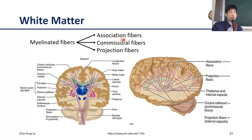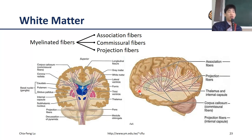The association fibers are defined as the fibers that connect different brain regions within one hemisphere. That means they won't go through different hemispheres — they simply connect different regions within the same hemisphere. You may have long association fibers, also called longitudinal fibers, or short association fibers, sometimes called U-fibers, because they simply connect neighboring gyri.